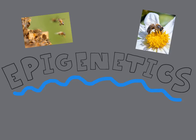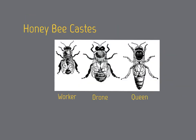A good example of epigenetics in action is in the caste system of Apis mellifera, or the western honeybee. There are three castes of honeybee: workers, drones, and the queen. Workers make up the majority of the colony and perform many different functions for their hive, such as defense, collecting food, and looking after young.